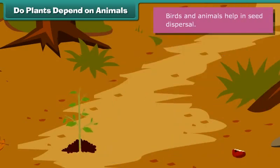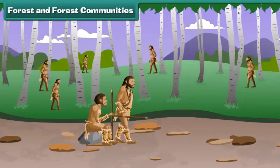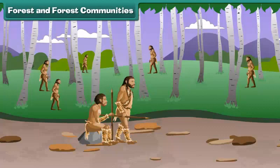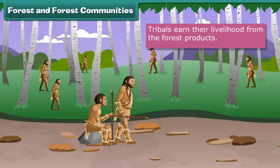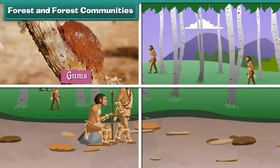The brightly colored, sweet-tasting pulp of fruits attracts birds and animals. Birds and animals eat the fruit and help in spreading the seeds. This way, the animals help plants to survive and flourish.